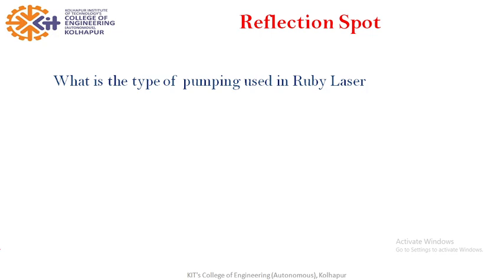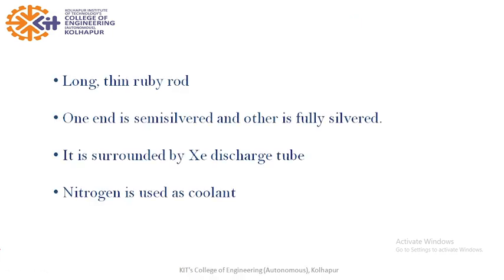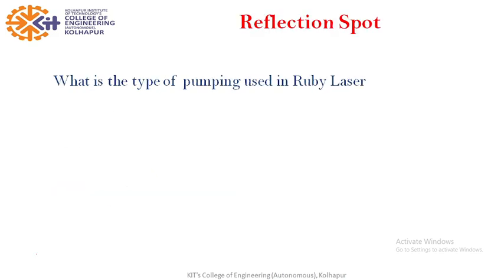One more thing: it is the ruby rod, so this crystal gets heated and therefore nitrogen we use as coolant. We can see here nitrogen we use as coolant. Remember this point. Now we come to one reflection spot.